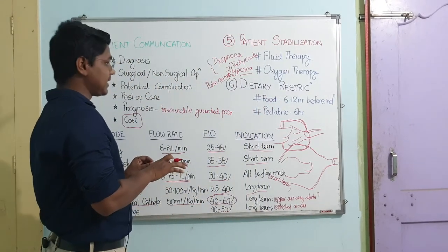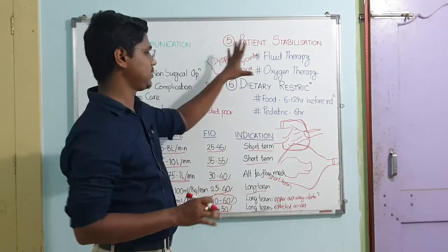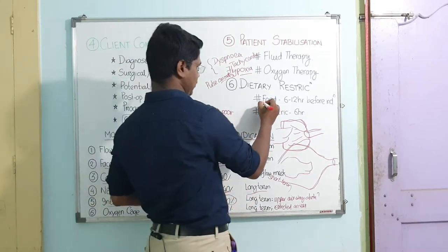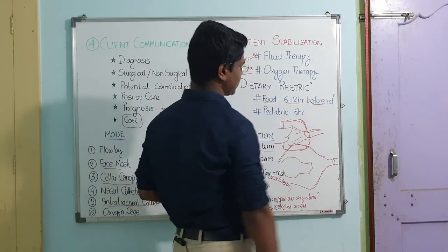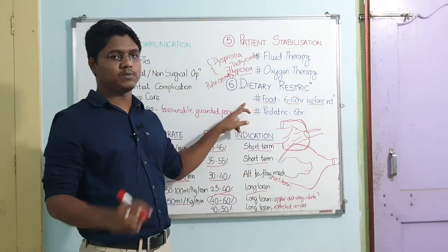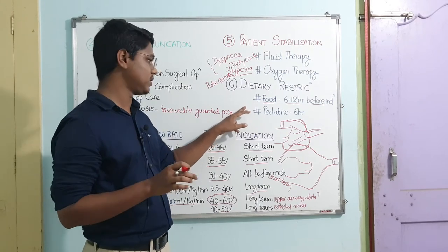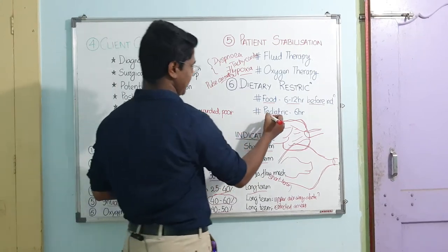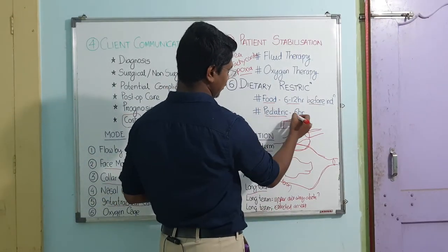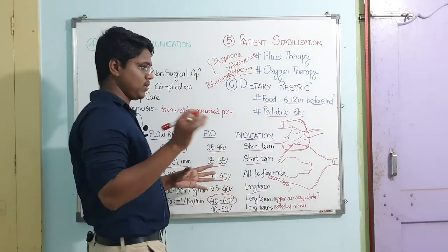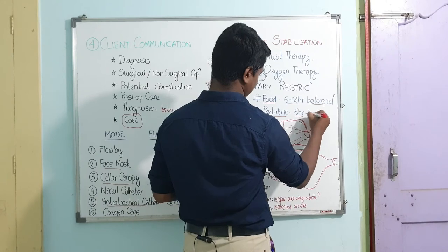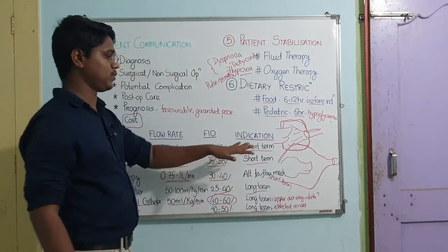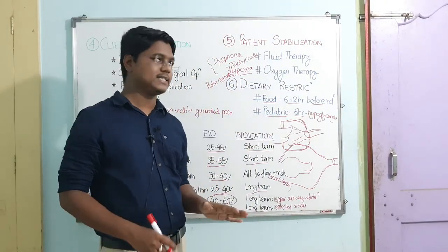Next, the last point is dietary restriction. If after all this you have decided to go for surgery, food is withheld for six to twelve hours before the induction of anesthesia. Regarding water, most books don't support withdrawal of water — water should be provided. For pediatric patients, food withdrawal is up to six hours maximum, because they can develop hypoglycemia — reduction in blood glucose. To prevent hypoglycemia, pediatric patients are fasted for up to six hours only.